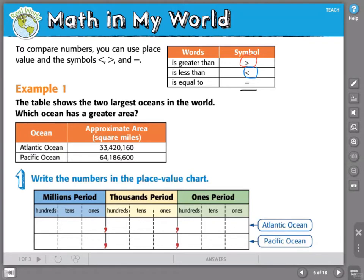In our very first example, we have a table that shows the two largest oceans in the world. And we need to know which ocean has a greater area.